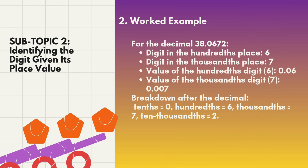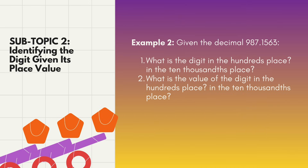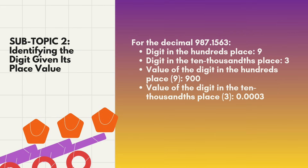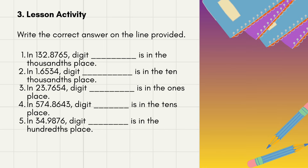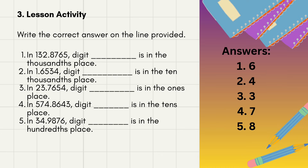Breaking down 38.0672 after the decimal point: tenths is zero, hundredths is six, thousandths is seven, ten-thousandths is two. For the next activity, identify the digit in the hundredths place — it is nine; in the ten-thousandths place — it is three. The value of the hundredths digit is 0.09 and the value of the ten-thousandths digit is 0.0003. For the final activity, identify digits by place: thousandths is the answer for number one, ones for number three, tens for number four, hundreds for number five.